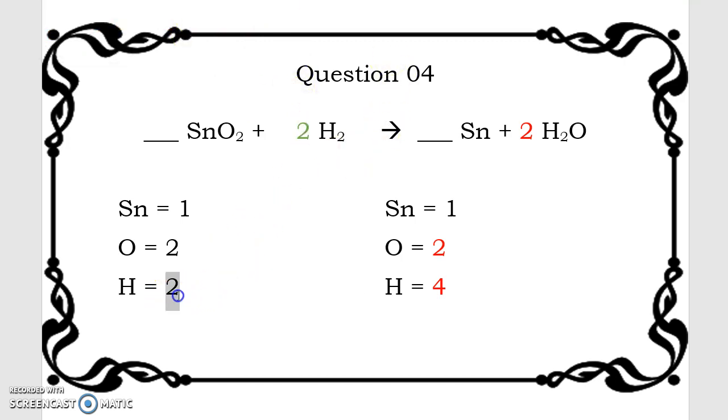Let's get that color changed. There we go. Now I have 4 hydrogens on the reactants, 4 on the products, 2 oxygens, 2 oxygens, 1 strontium, 1 strontium.